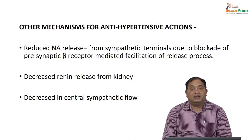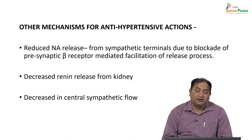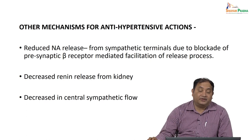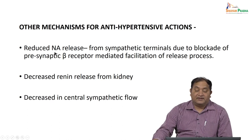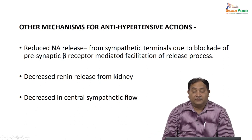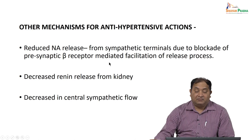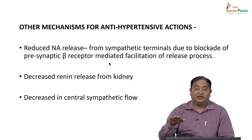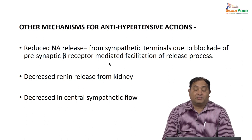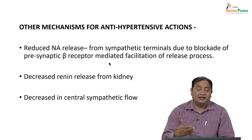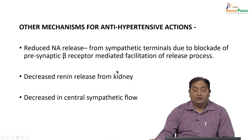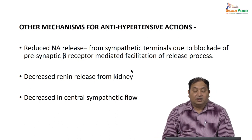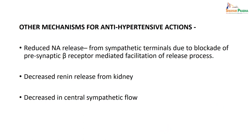Regarding the antihypertensive mechanism: beta blockers act directly on beta-1 receptors and on peripheral beta-2 receptors, but also through central mechanisms. There is noradrenaline release from sympathetic terminals, and due to central blockade of pre-synaptic beta receptor-mediated action, noradrenaline release is decreased, improving hypertensive pressure. Another mechanism: since beta receptors are also present in the kidney, they alter renin release. Beta blockers also inhibit central sympathetic flow, so altogether they act as antihypertensives via beta-1 and beta-2 receptors.